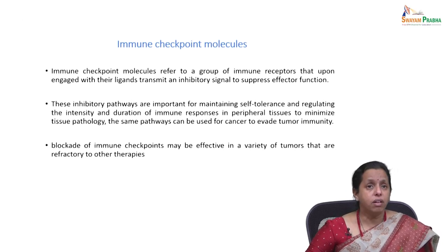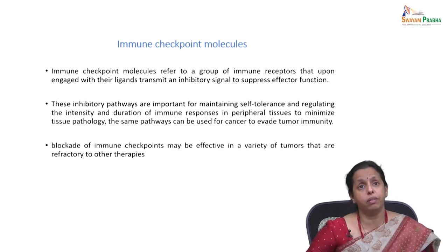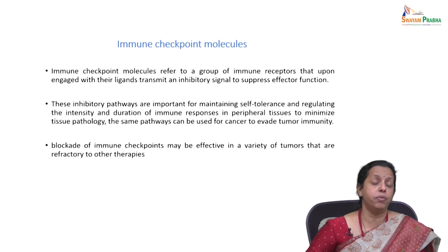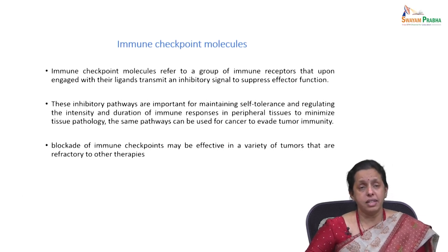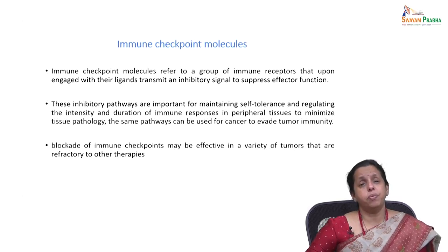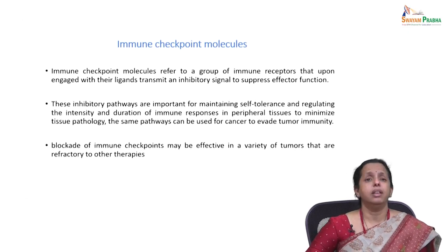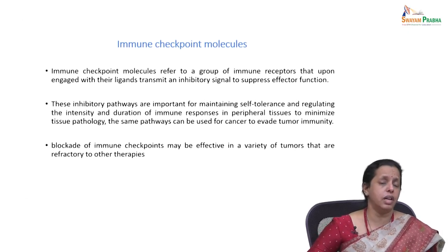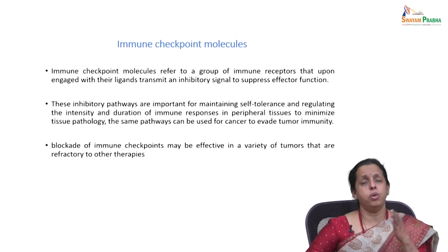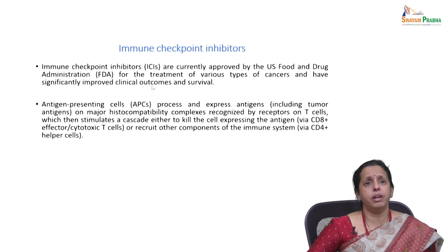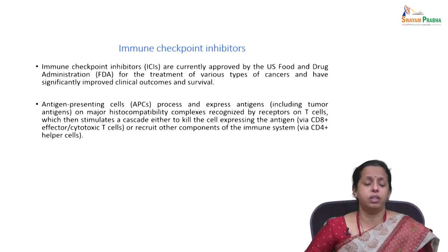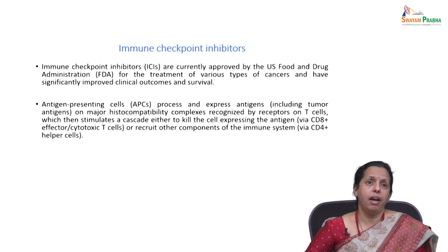Immune checkpoints can be blocked, and this blockade of inhibitors — such as anti-PD-L1 — is effective in a variety of tumors refractory to other treatments. For example, sometimes patients not responding to chemotherapy or radiation may respond to anti-PD-L1 monoclonal antibody combined with radiation therapy. These immune checkpoint therapies are currently approved by the US FDA for treatment of various cancer types and have significantly improved clinical outcomes and survival.